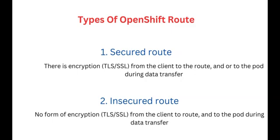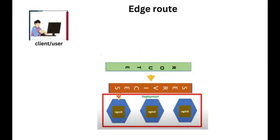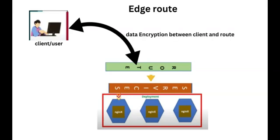In OpenShift there are three ways routes can be secured: edge, pass-through, and re-encryption. With edge routes, there is a level of traffic encryption only between the client and the route — that's where it stops, with no encryption between the route and the application pod. TLS terminates at the router. The TLS certificate for edge routes will be configured when creating the route; otherwise, OpenShift will automatically assign its own self-signed certificate.